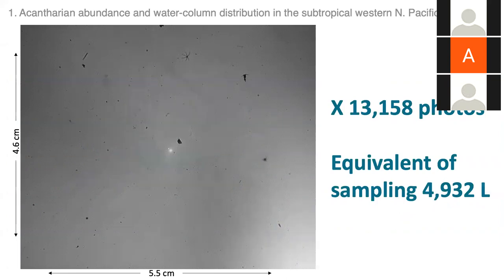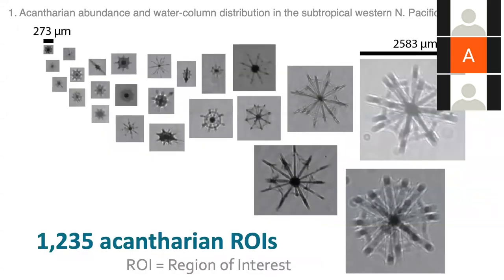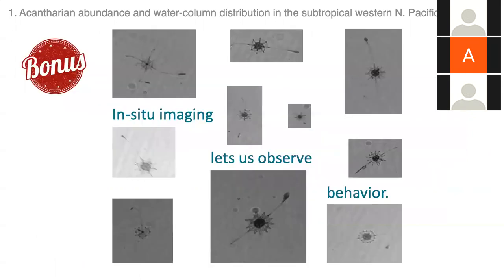Most of the photos look like this surface image — lots going on. Photos taken closer to 1000 meters have less to see, but you can spot one acantharian on the bottom left. By looking at all of these photos, I identified 1,235 acantharian regions of interest in a wide variety of sizes and shapes. An added bonus of this method was seeing acantharians in their natural state — on multiple occasions I observed acantharians with strange droplet structures that, to my knowledge, we haven't seen before.